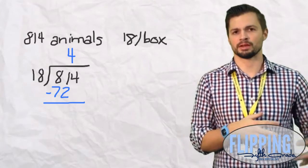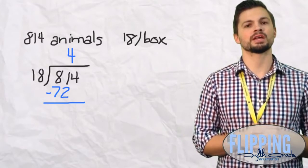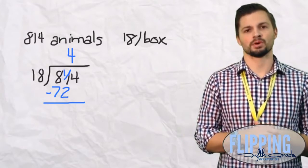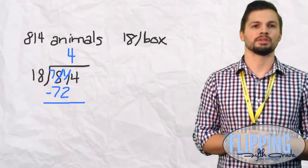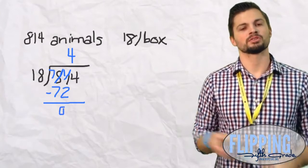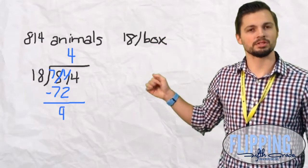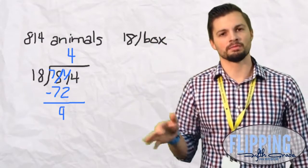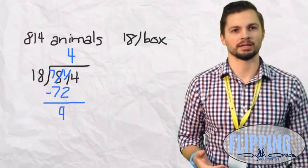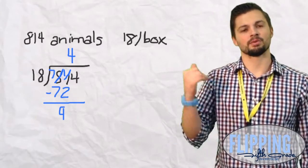Now if you don't know that trick or that confused you, just do the problem off to the side. 18 times 4, 18 times 4 will give you 72. So now, we keep our 4 up there, we multiply 4 times 18 is 72 and we subtract. 81 minus 72 is going to give us 9. So we have a 9 there and we must drop the 4. Now how many times does 18 go into 94?